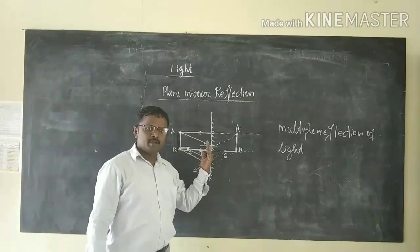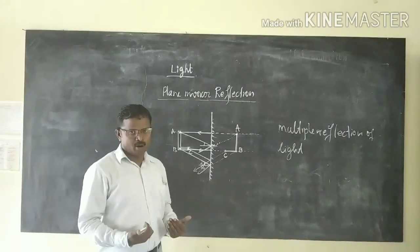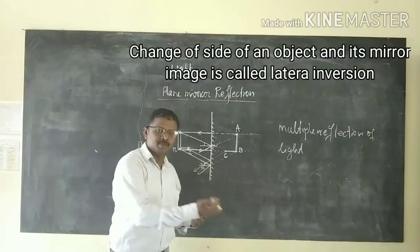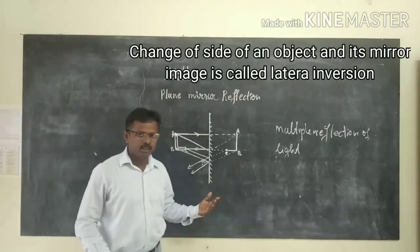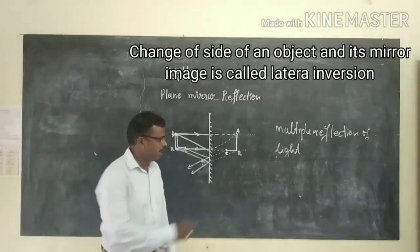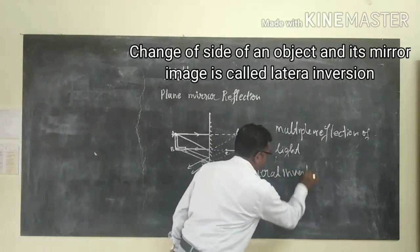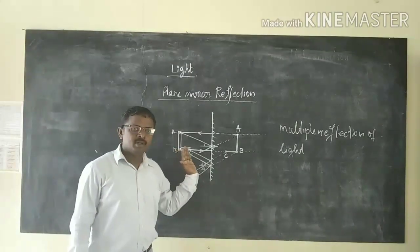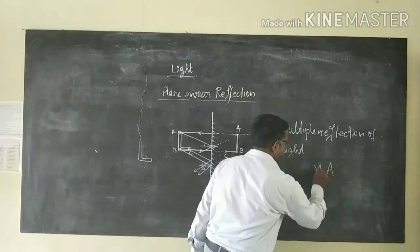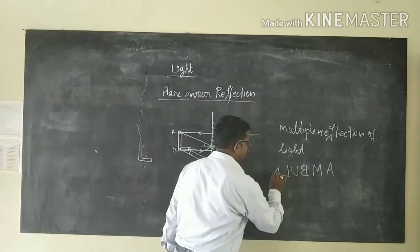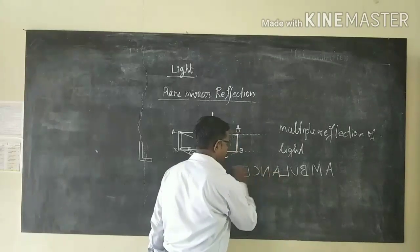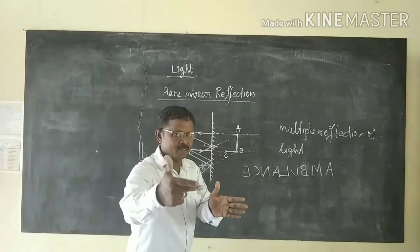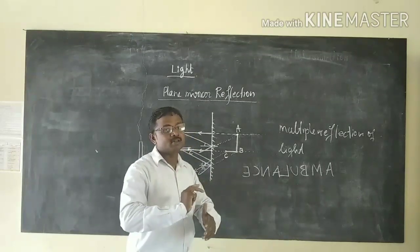If you stand in front of the mirror, the right side of your body appears to be the left side in the image, and the left side of your body appears to be the right side in the image. This change of side of an object to its image side is called lateral inversion. This type of lateral inversion you might have seen on an ambulance, where A-M-B-U-L-A-N-C-E is written in reverse so that by observing the letters in your side mirror you can easily read 'ambulance'.